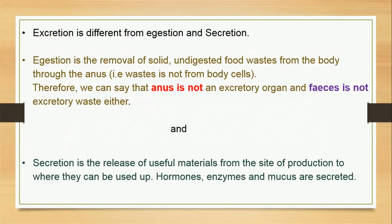Remember that excretion is different from egestion and secretion. Excretion has to do with the removal of waste products formed during metabolic reactions in cells. Egestion is the removal of solid undigested food waste products from the body through the anus — so the anus is not an excretory organ and the faeces passed through the anus is not excretory waste. Secretion is the release of useful materials from the site of production to where they are used in the body — hormones, enzymes, and mucus can be secreted, and these materials are useful in the body.